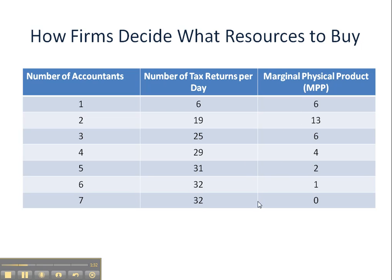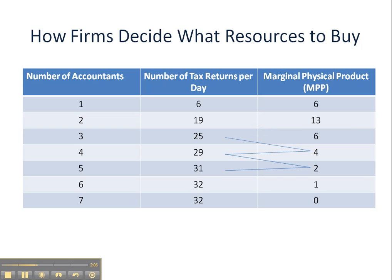We can figure out the MPP, or Marginal Physical Product, by subtracting the total output of one worker from the total output of the next, and we get the contribution that each individual unit of input is making. The second worker contributed 13 towards the total. The third worker contributed 6. The fourth worker contributed 4 returns. The fifth worker contributed 2. The sixth worker contributed 1. And the seventh worker didn't contribute any at all.